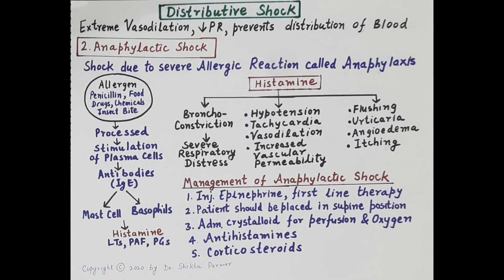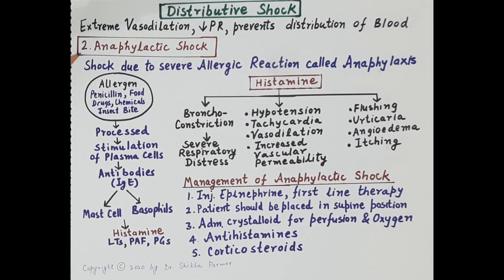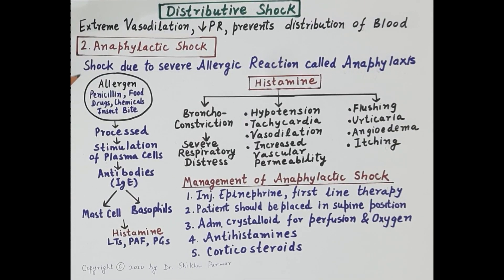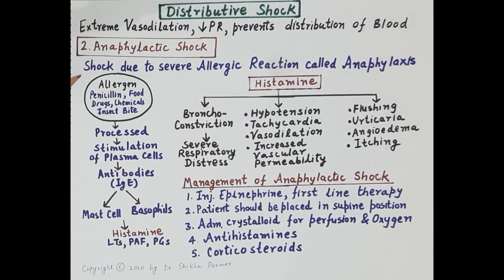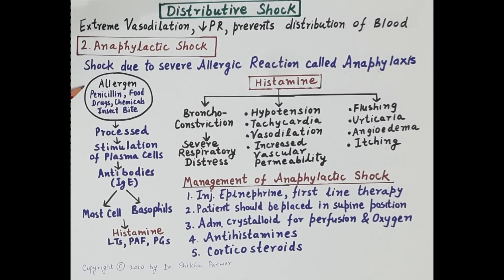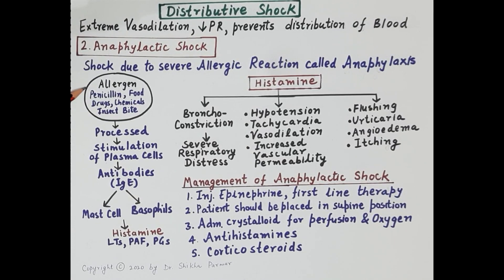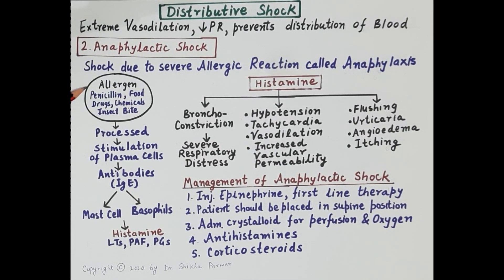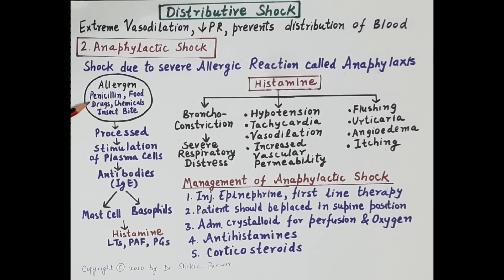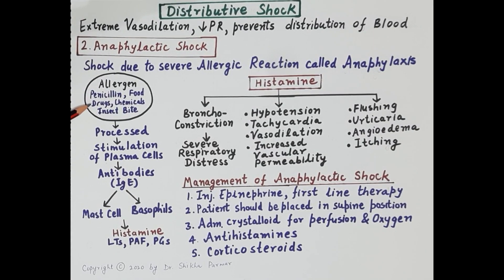The second type of distributive shock is anaphylactic shock — a shock due to severe allergic reaction, called anaphylaxis. Anaphylaxis is caused by allergens or antigens such as the drug penicillin, certain foods, sulfa drugs, chemicals, and insect bites — all of which can act as allergens.